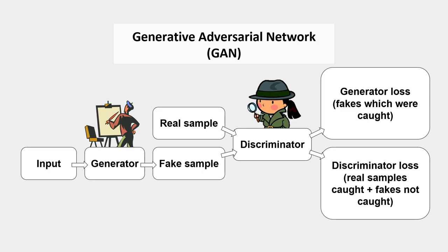The discriminator is penalized when it classifies real images as fake, or fake images as real. On the other hand, the generator is penalized when the discriminator correctly classifies fake images as fake. As the discriminator and generator try to minimize these penalties, or losses, both get better and better at their tasks.